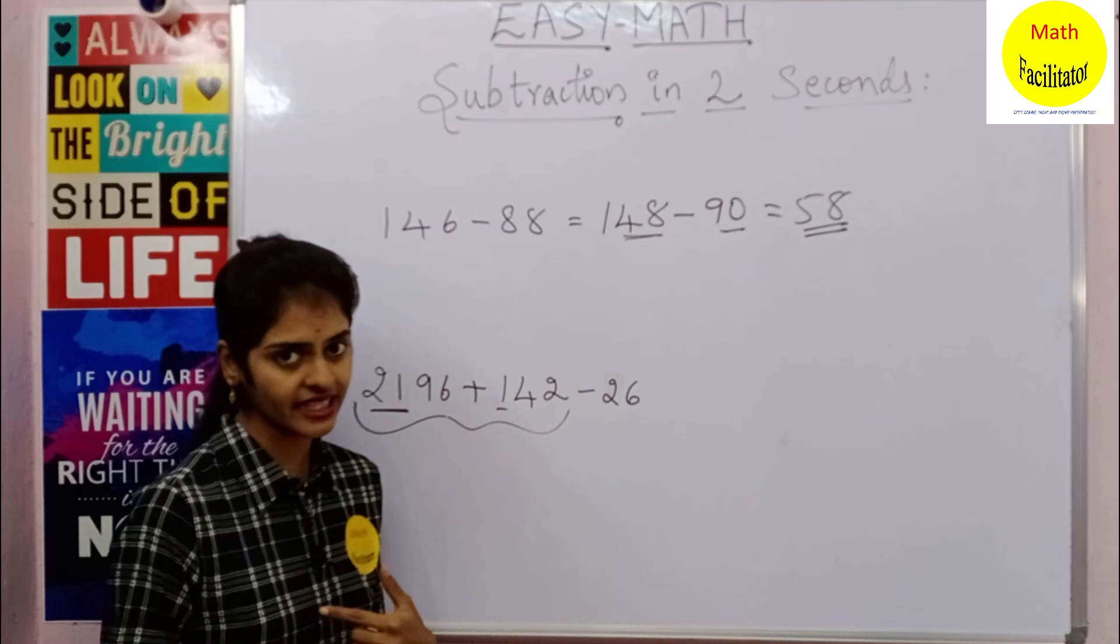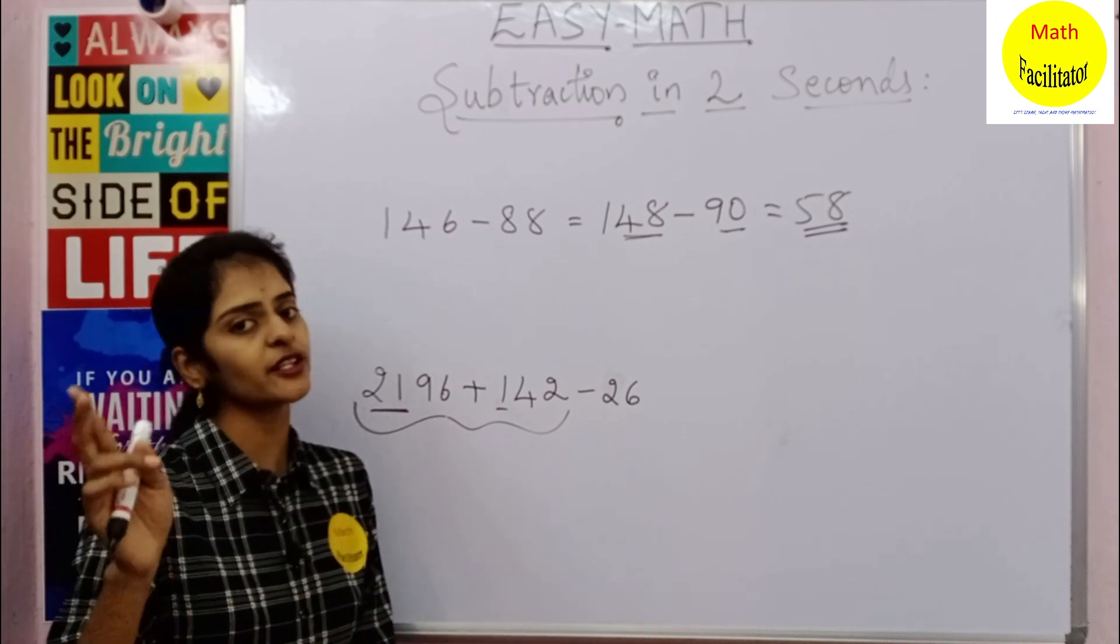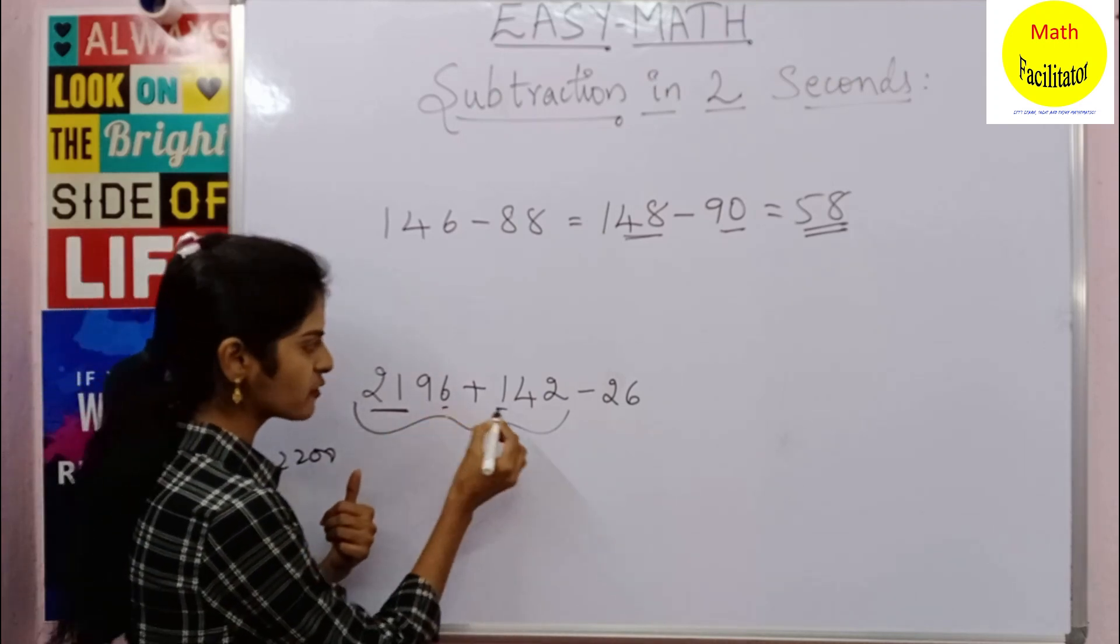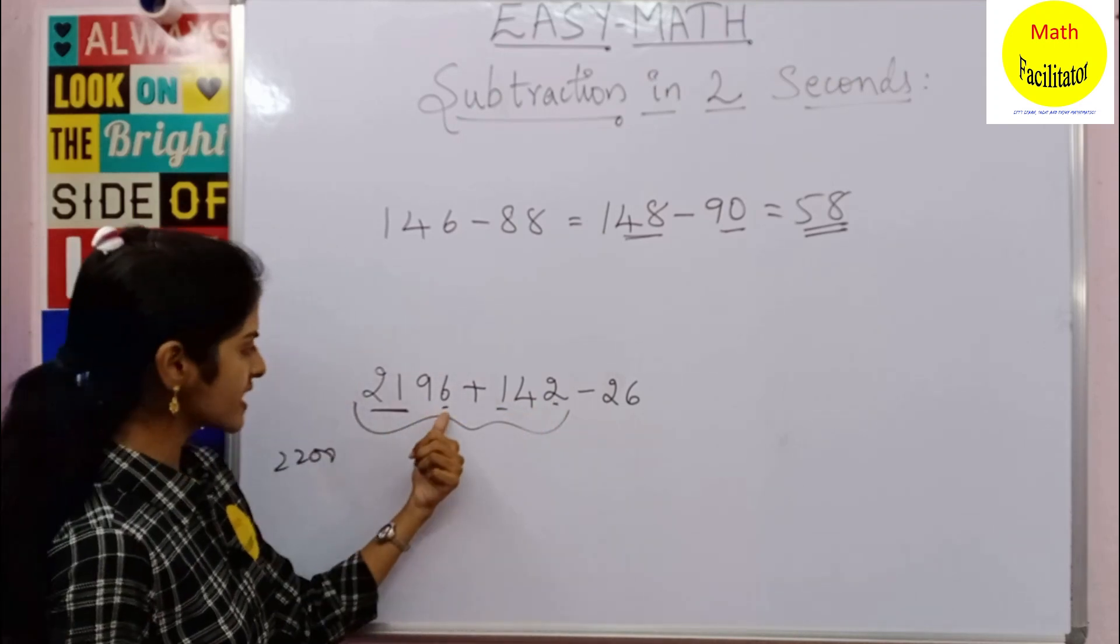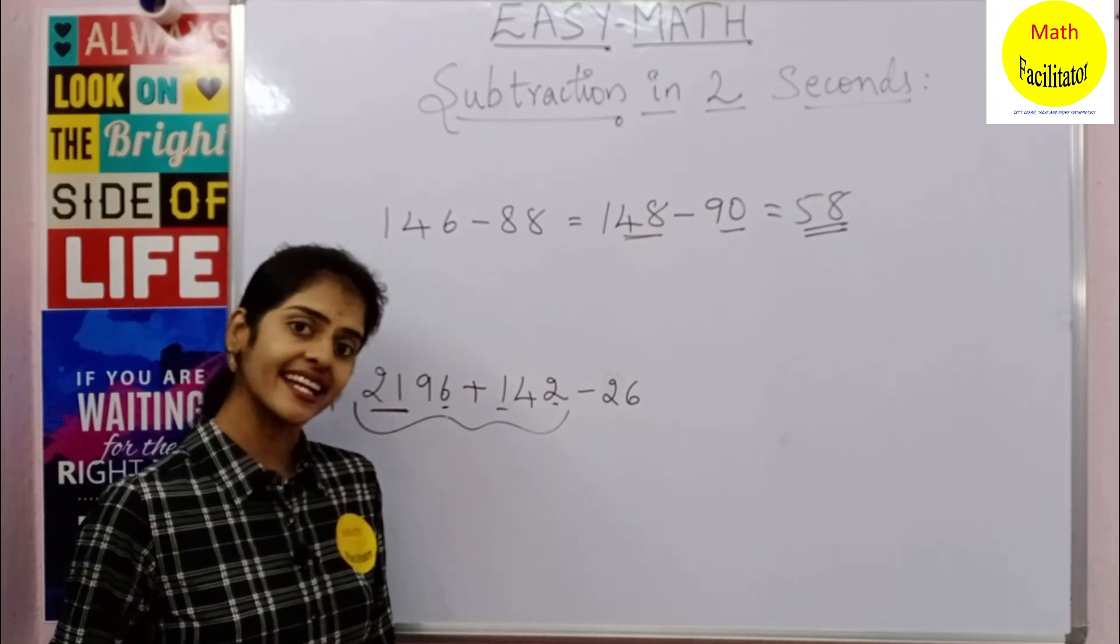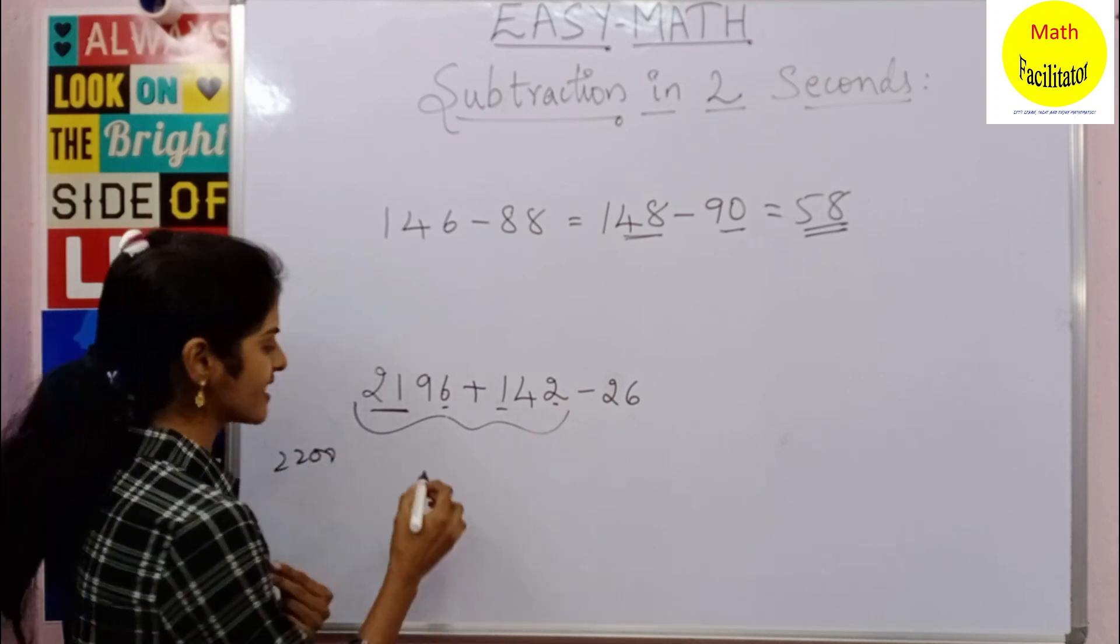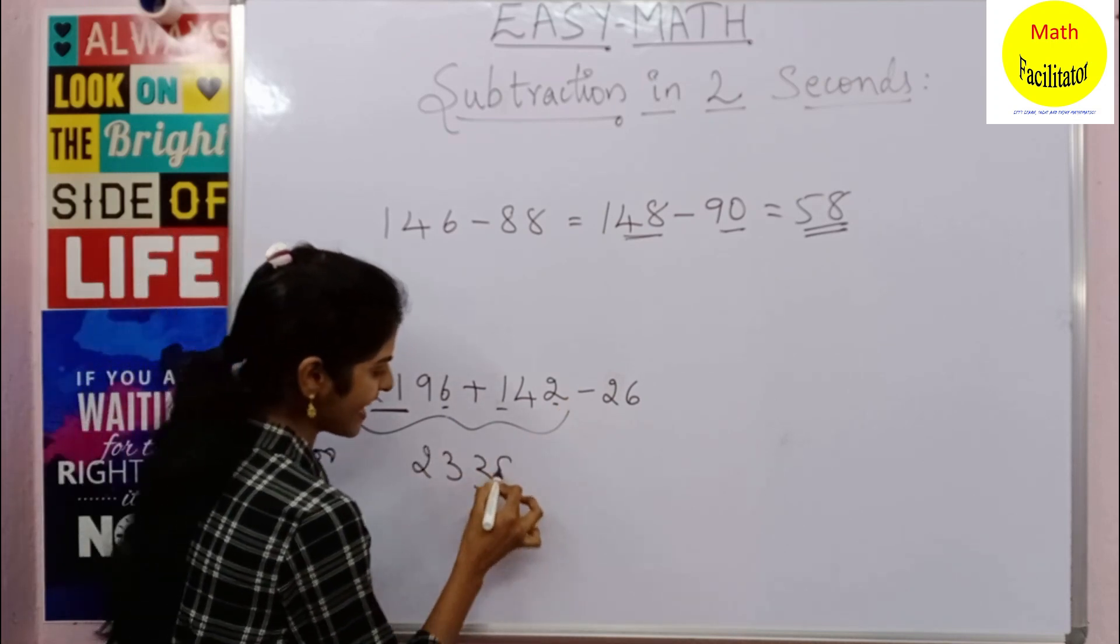Next, you are left out with 6 and 2. So 6 plus 2 gives you 8. So 2330 plus 8 is nothing but 2338. Isn't it simple? By practice you can eliminate this also.